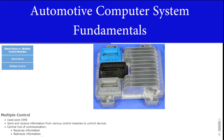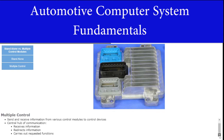Multiple control module systems are used in vehicles produced after 1995. Multiple control modules receive information from various control modules and send processed information to the control devices. In this system, one control module is used as the central hub of communication. This hub receives information from the control modules and redirects it to the corresponding control module or modules to carry out the requested functions. An example is the engine control module, which uses inputs from various sensors to control the air-fuel mixture in the engine.